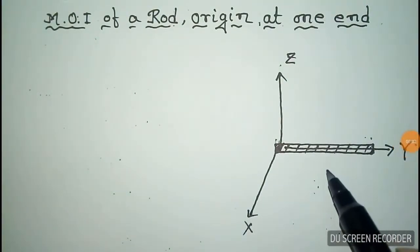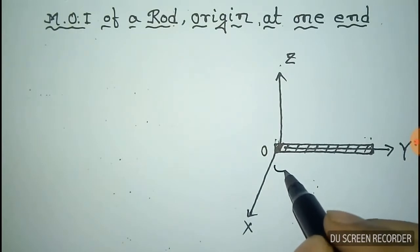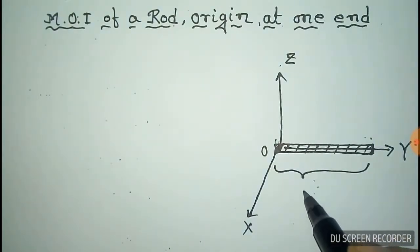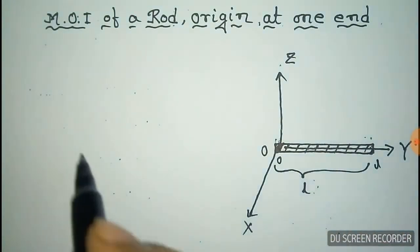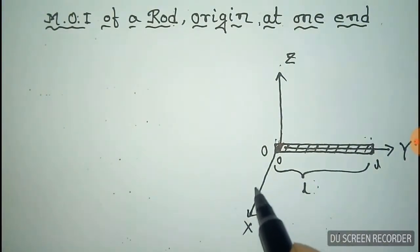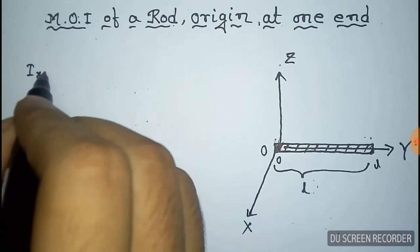We shall derive the moment of inertia of a rod. Take an origin at one end and the total length of the rod is L, so this is zero and this is plus L. We have to calculate the moment of inertia about the x-axis, so I_xx equal to